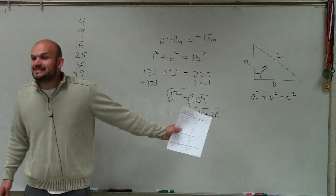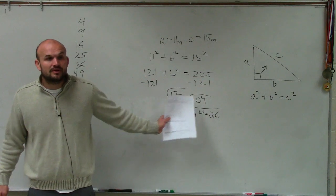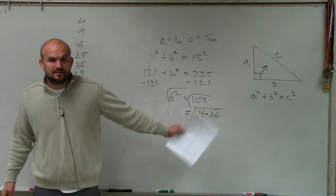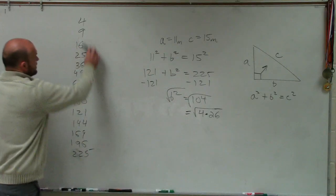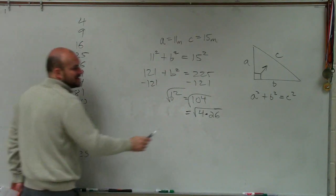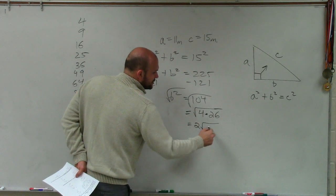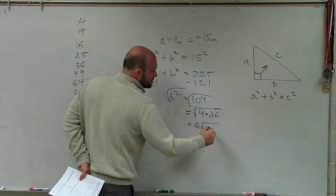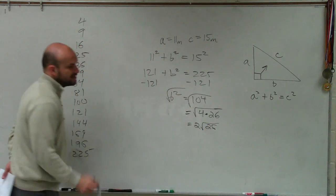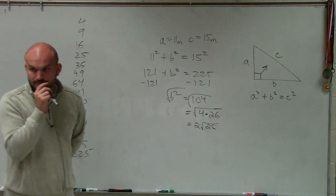2. 26. We know 4 is 2. Can we do a number for 26? No. Can I divide any one of these numbers into 26? No. No. So guess what? The 26 stays under the radical. And the 4 turns into 2. And that's going to be your final answer. OK?